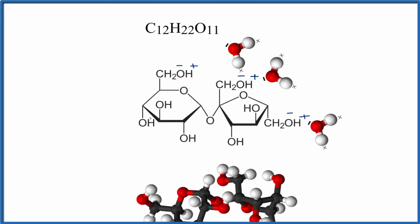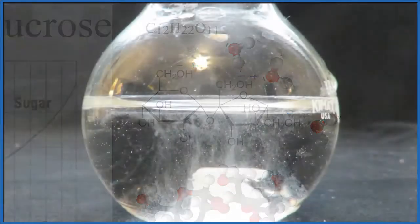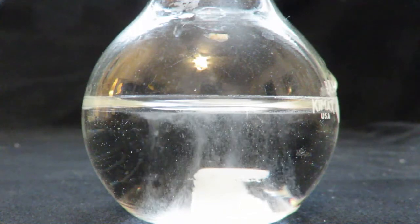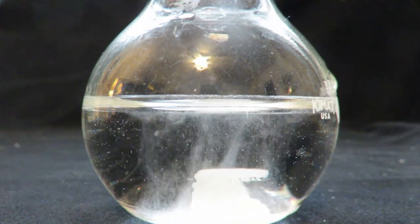So sucrose, sugar, is very soluble because it's a polar molecule, and that means that the polar water molecules are attracted to it, they can surround it, and it dissolves. This is Dr. B with the solubility of sugar, sucrose, and thanks for watching.